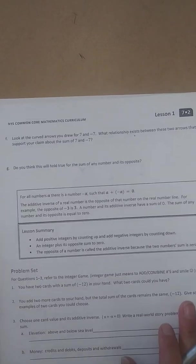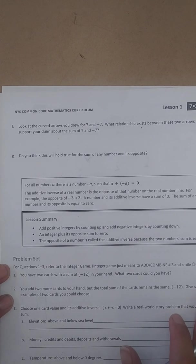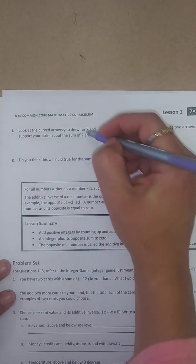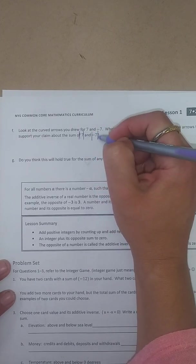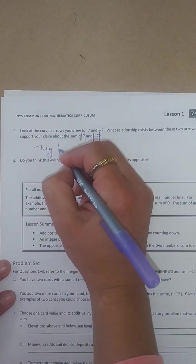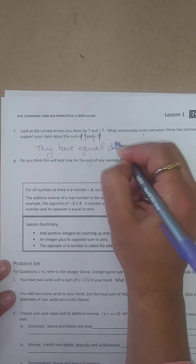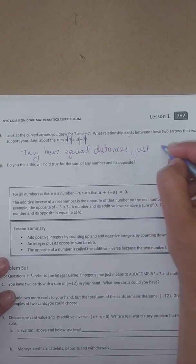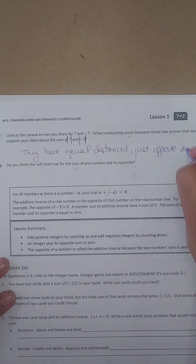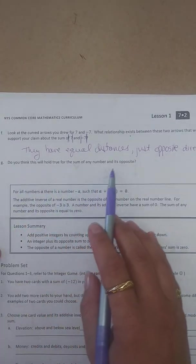Okay? So I'm going to go to the next page. So it says look at the curved arrows. I drew straight ones. It's okay. For 7 and negative 7, what relationship exists between these two arrows that you would use to support your claim about the sum of 7 and negative 7? Well, remember we did this? Their absolute value or their distances are equal. They have equal distances just opposite directions. And when we have opposites, they add to 0.